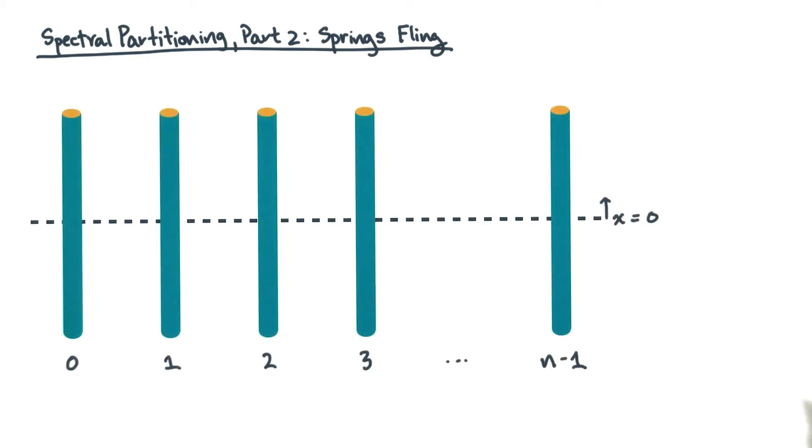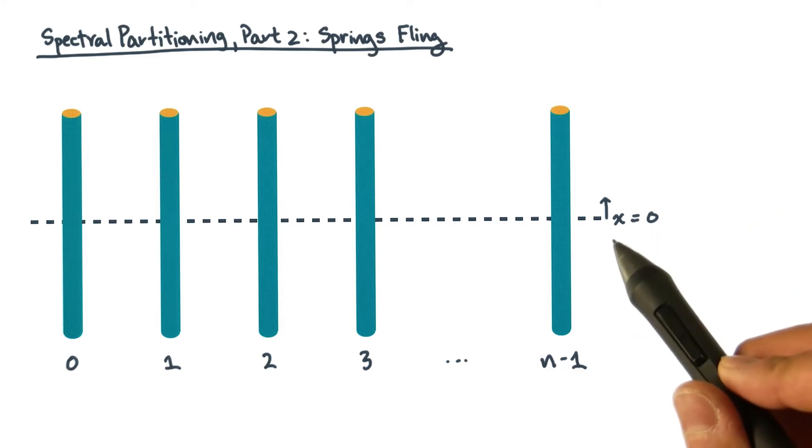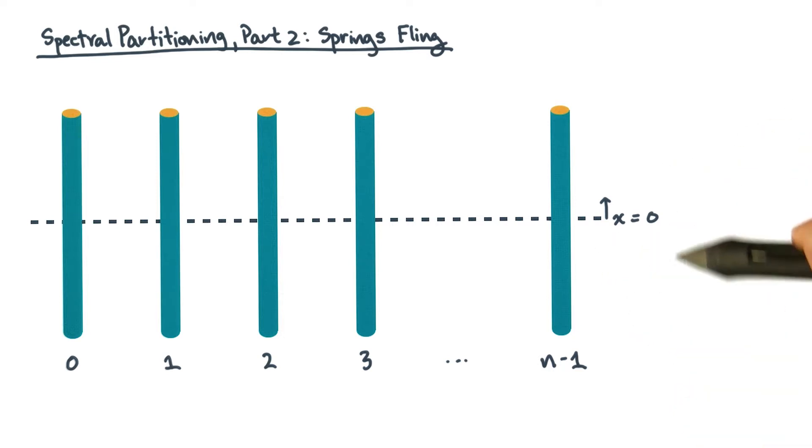Imagine that you have a bunch of sticks of infinite length. Let's suppose the sticks are fixed, meaning they don't move. This dashed line is just a reference. We're going to measure distances relative to the reference.